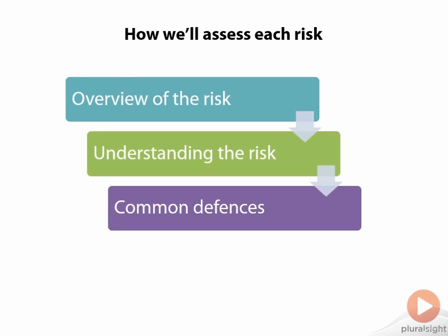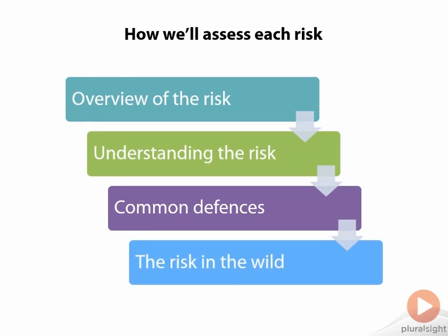The really important part is understanding the defenses. I'll outline three key areas for each risk that will secure the application. In security we don't tend to just talk about one mitigation — it's all about security in depth, layer upon layer of defense, so that we don't leave any single point of failure. That is a critical message, and that's why you'll keep seeing multiple defenses for each risk. Finally, I want to talk about the risk in the wild — showing where it has actually been exploited and websites actually attacked — because unless people can conceptualize the risk and see what it means, it's hard to buy into the web security value proposition.